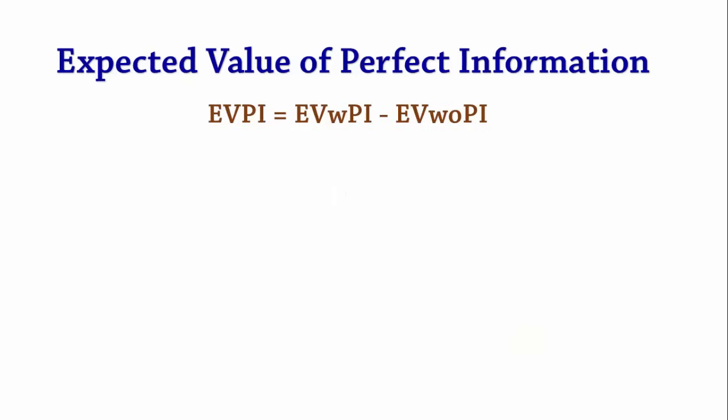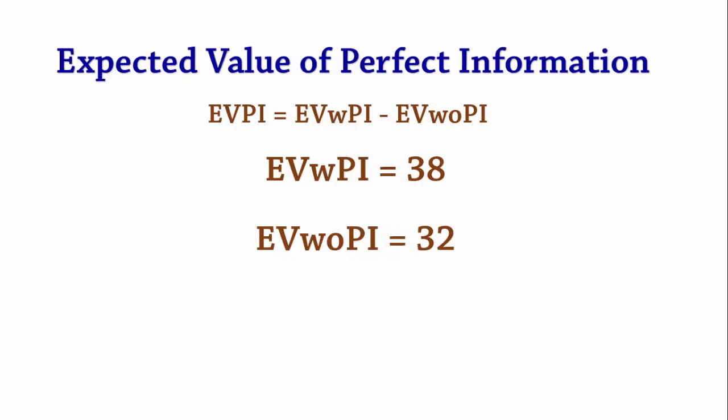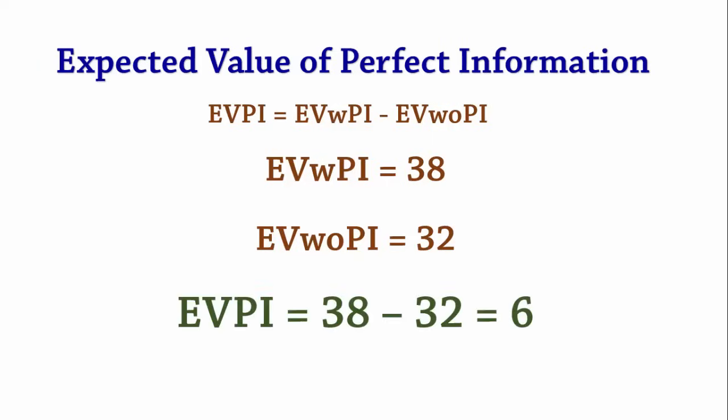The expected value with perfect information is 38. As calculated earlier, the expected value without perfect information, or maximum EMV, is 32. Therefore, EVPI is 38 minus 32, which is 6.